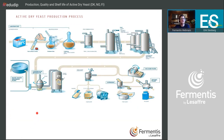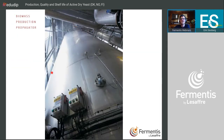The process starts in the laboratory at minus 80°C, where we take a pure culture from the freezer, put it in a test tube, grow the biomass, and then scale up in volume — from a few million cells, to a few hundred grams, to a few hundred kilos, to a few tons. For brewing yeast we stop at this point. For baker's yeast we go further, producing tens of tons at once in massive fermenters — one pictured here is 3,000 hectoliters.